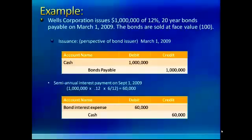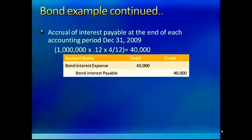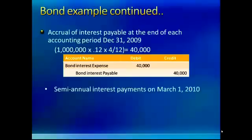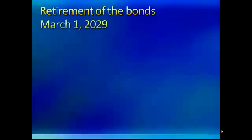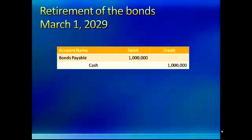Between September and December 31st, interest on this bond accrues but won't be paid until March 1st of the next year. So an adjusting entry is needed at December 31st, 2009 for $40,000 to accrue four months' worth of bond interest. When the payment is made on March 1st, you pay $60,000, wipe out the payable, and record the additional $20,000 of expense for January and February. On March 1st, 2029, when the bond matures 20 years later, you simply remove the bond payable and pay back the $1,000,000 in cash.